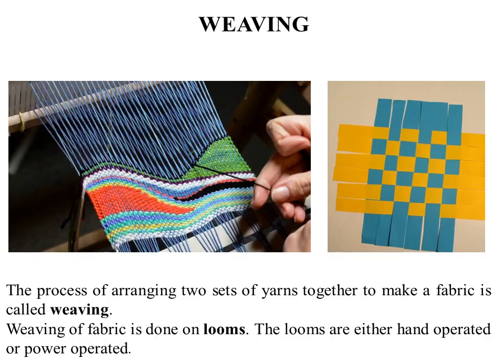In weaving, the process of arranging two sets of yarn together to make a fabric is called weaving. Two yarns are used and they are interconnected to each other to make the fabric. The weaving of fabric is done on looms, which are either hand operated or power operated.